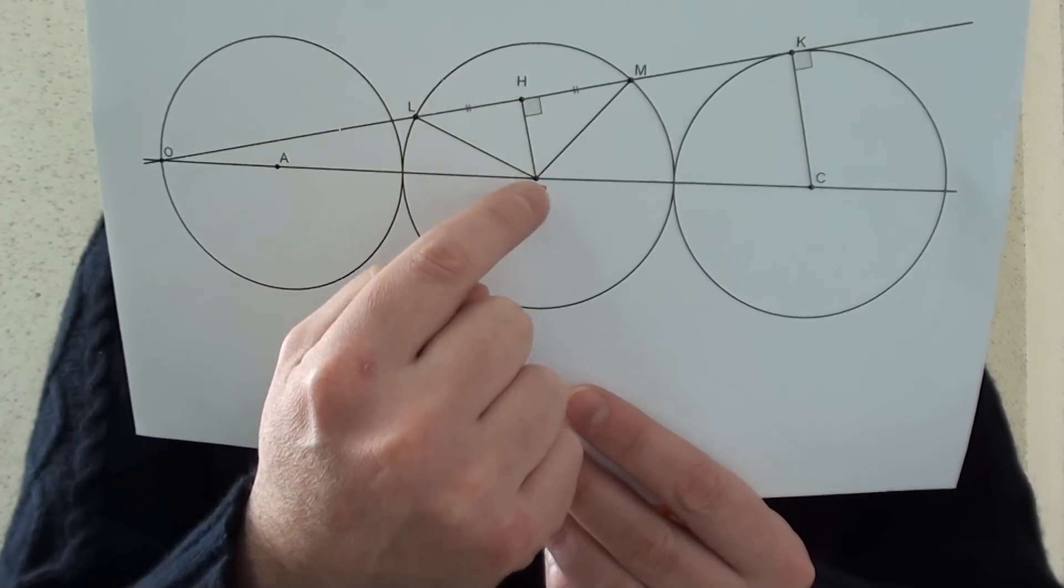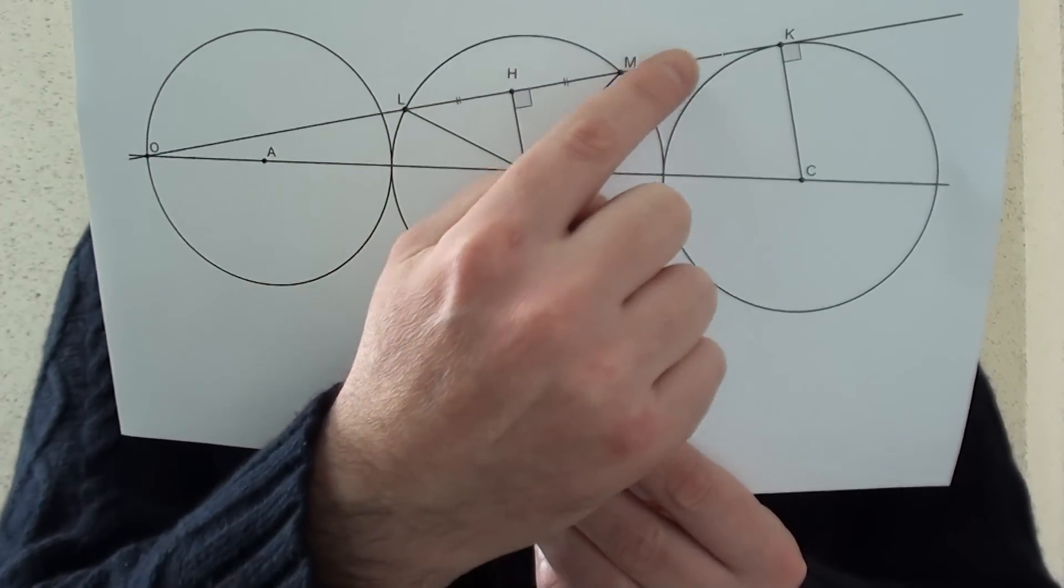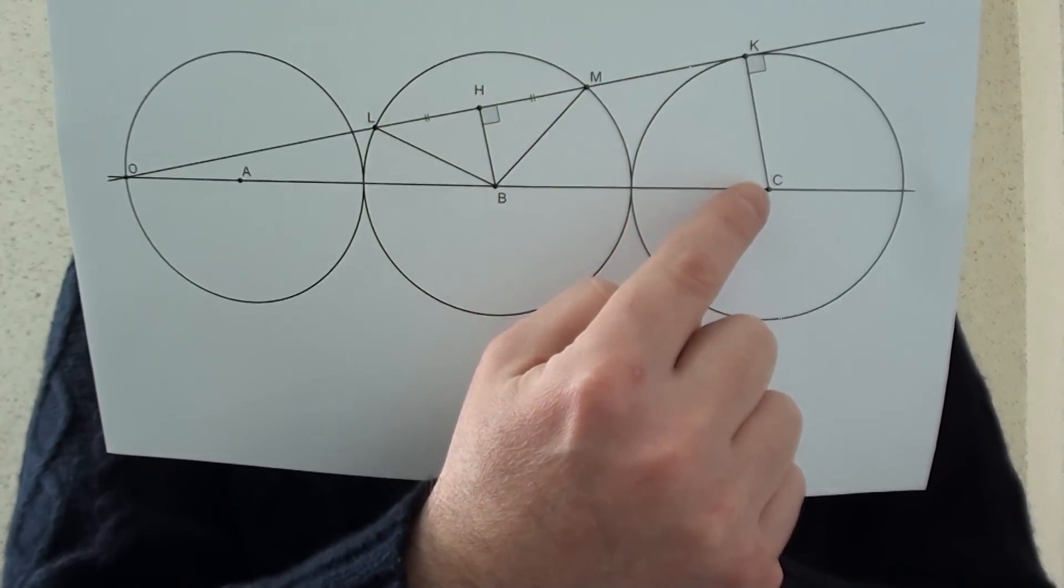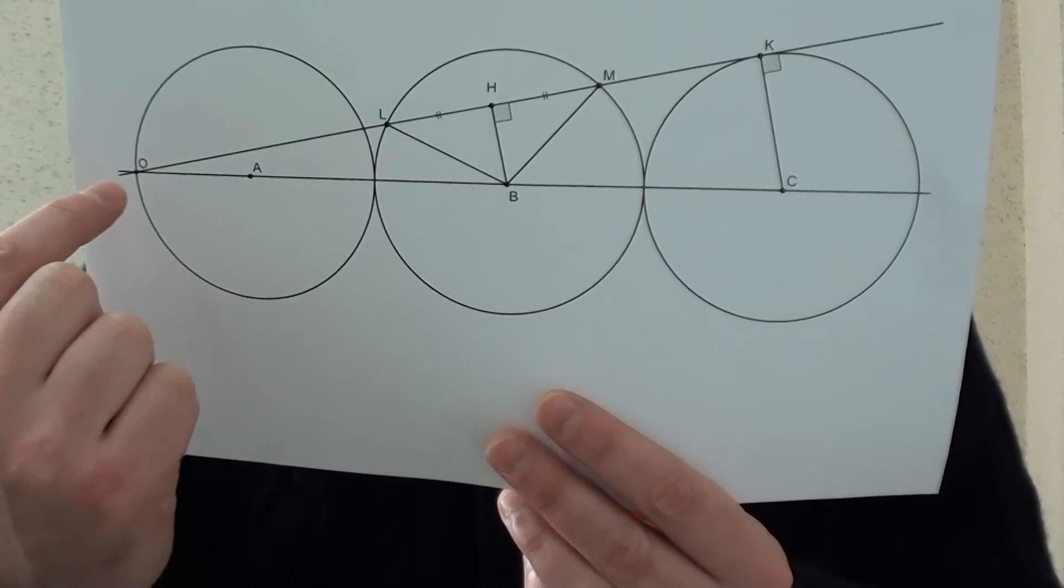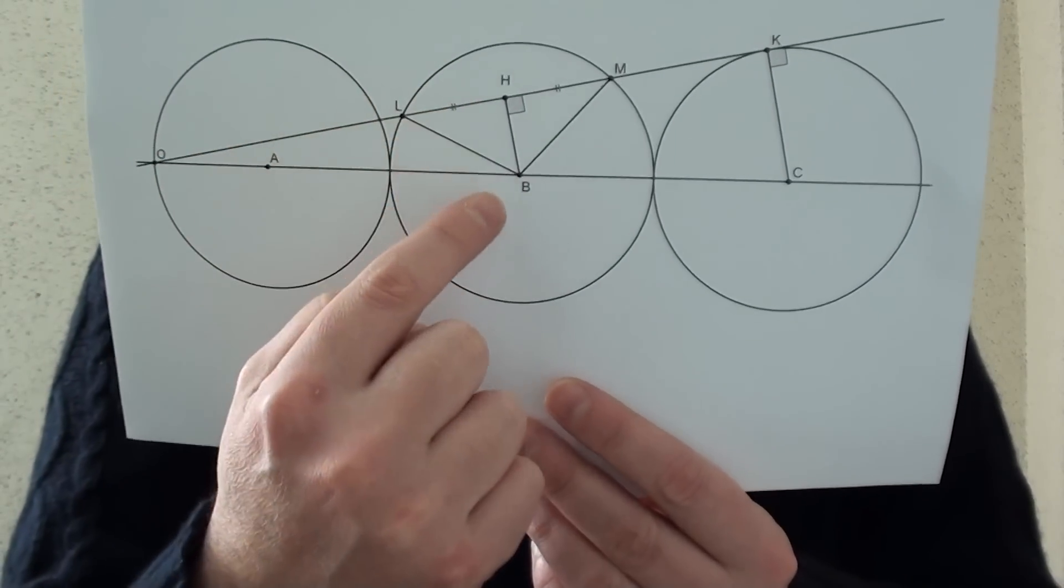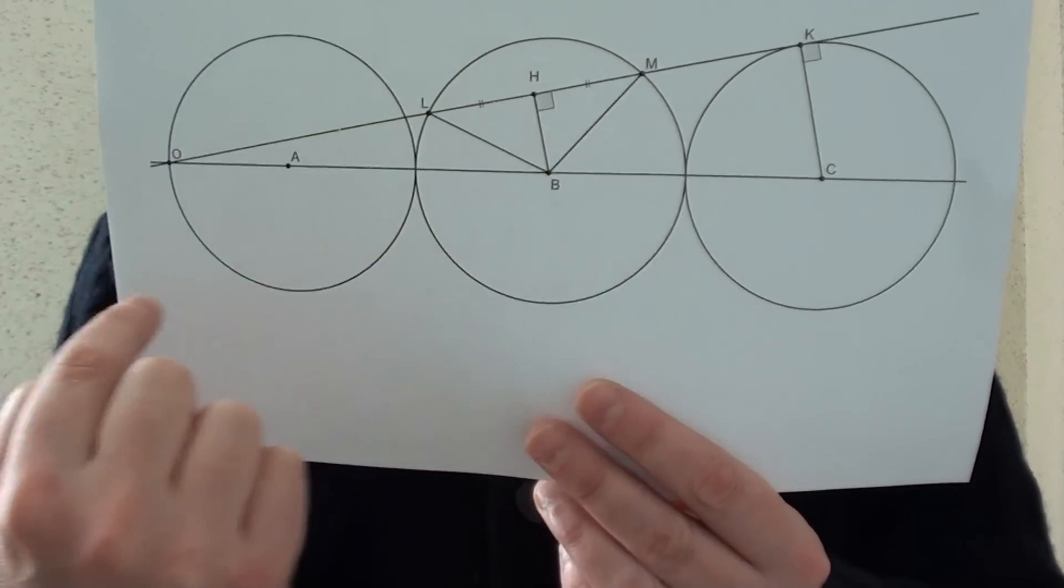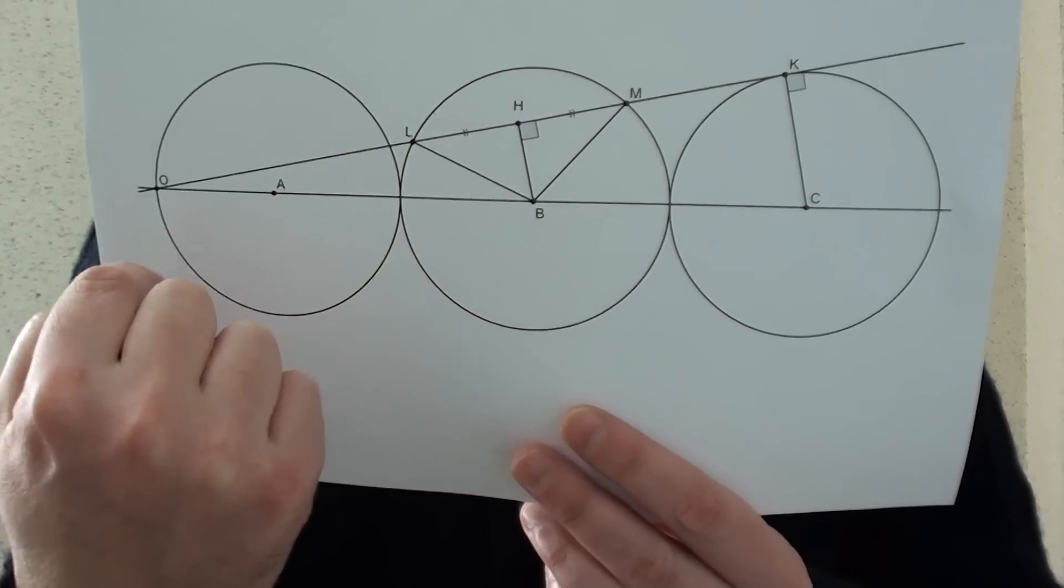BH is perpendicular to OK. Now we have two triangles, we have this big OKC triangle and the smaller OHB triangle. Those two lines being parallel, those two triangles actually are proportional in size.